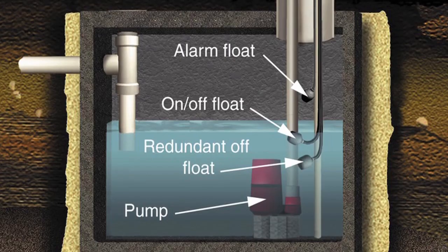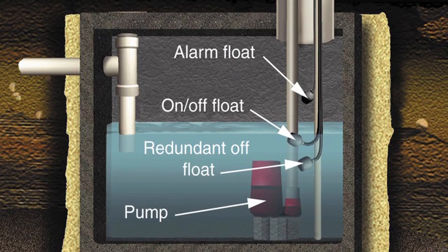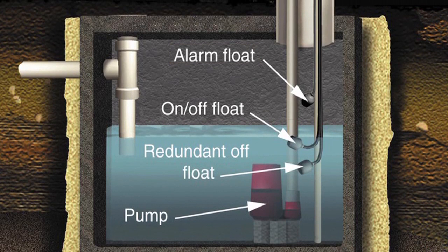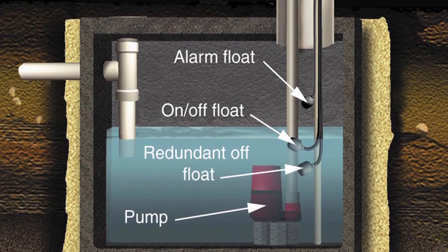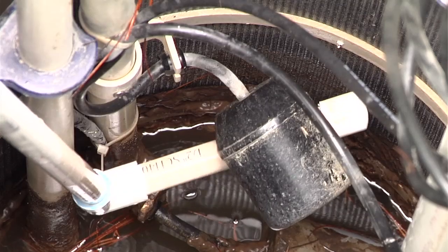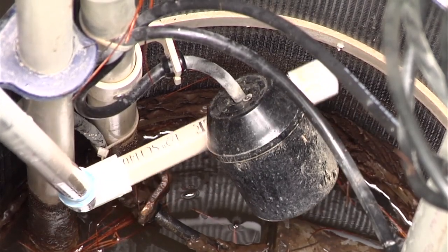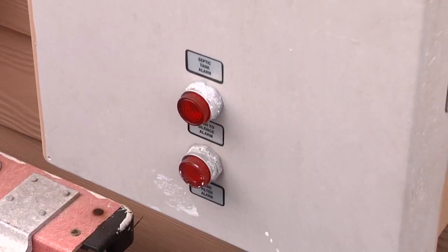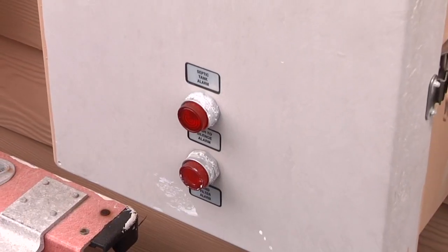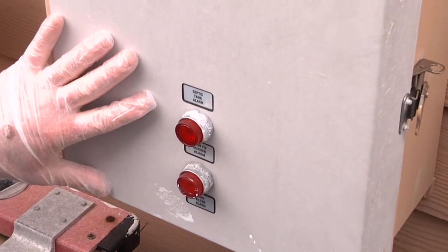The third and highest float is the alarm float. If the pump fails or too much wastewater enters the pump tank, the wastewater level rises and lifts the alarm float, which sounds an alarm on the control panel near the house. Push to silence it and then call a licensed professional. The alarm is there to let you know there's a problem, so don't ignore it.